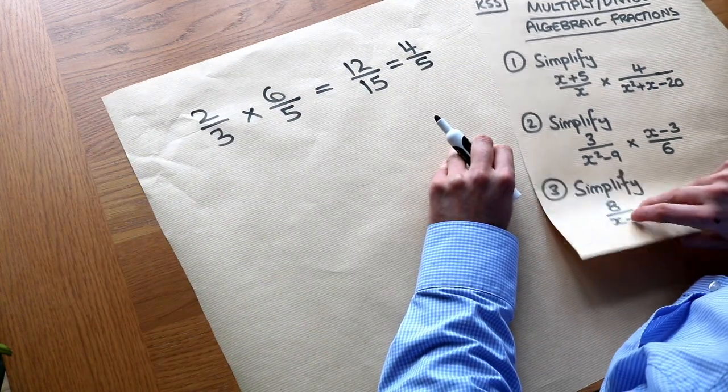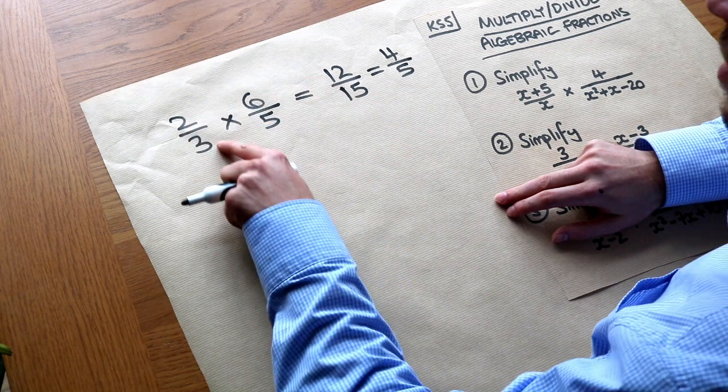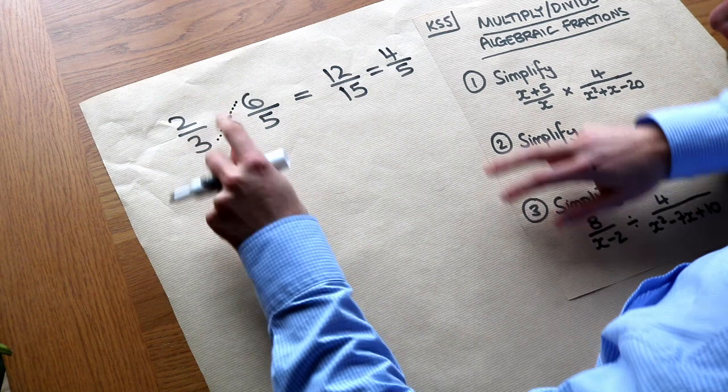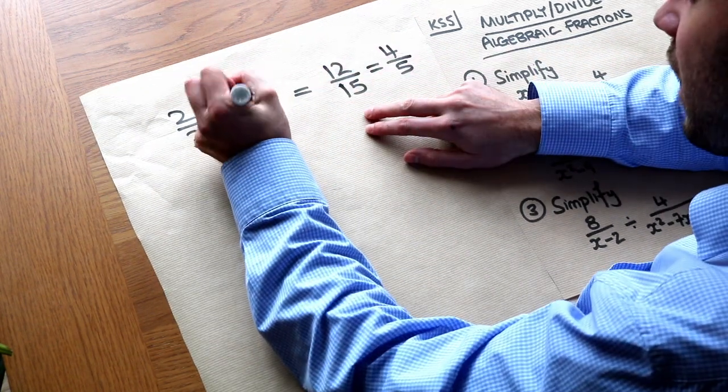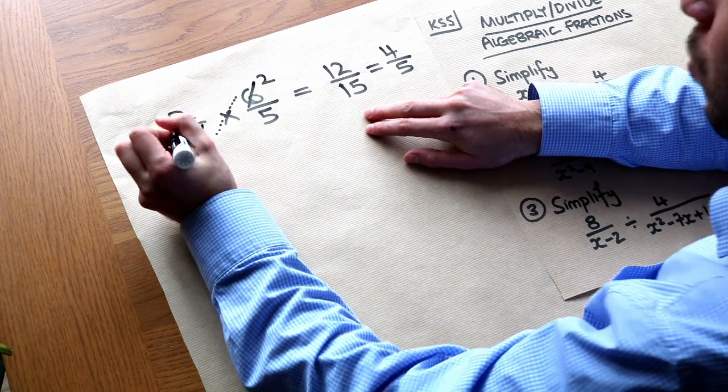But you might also be familiar with the idea of cross-cancelling. So we can simplify before we actually get to times these together. So can you see that this 6 and 3 we can identify a common factor diagonally of 2, and you can replace that with 2 because we can divide it by 3, and if divide that by 3 as well we get 1.